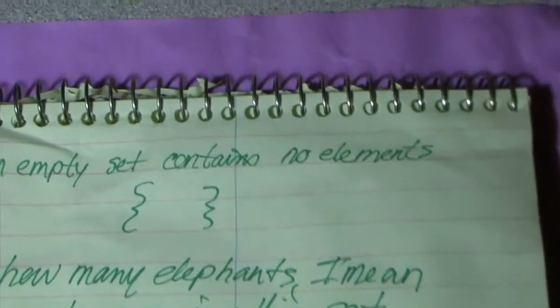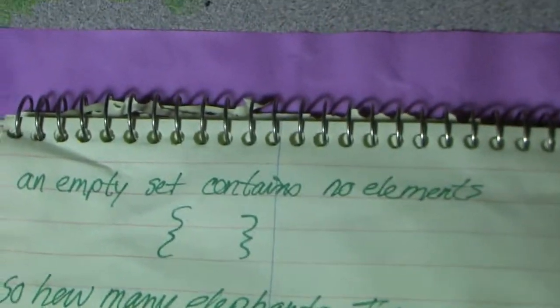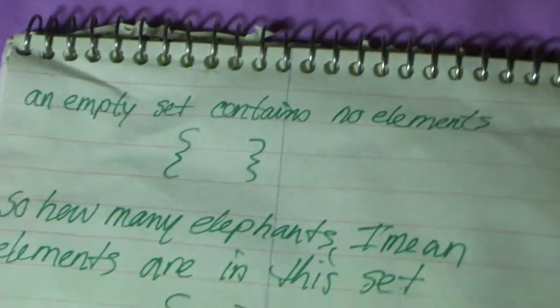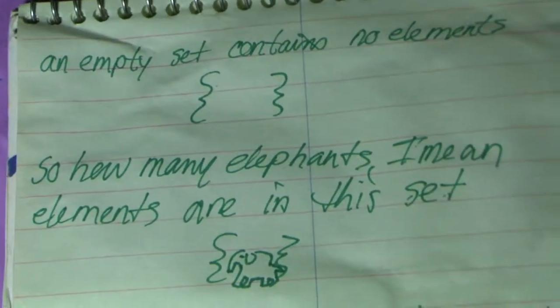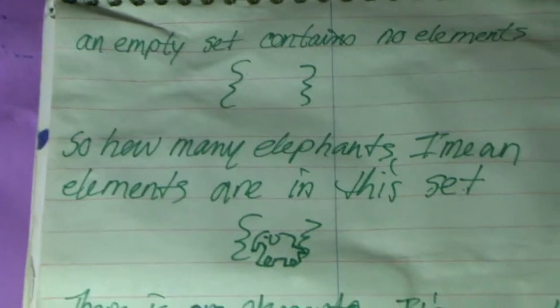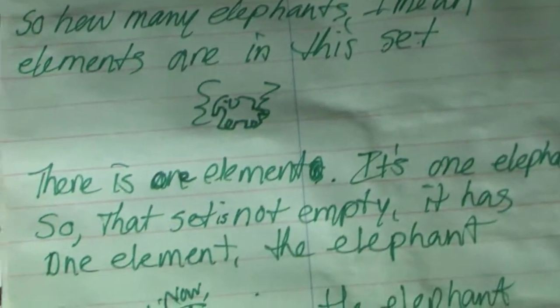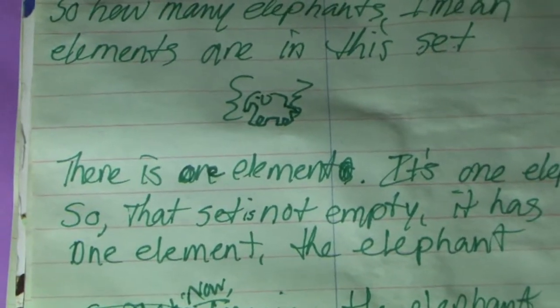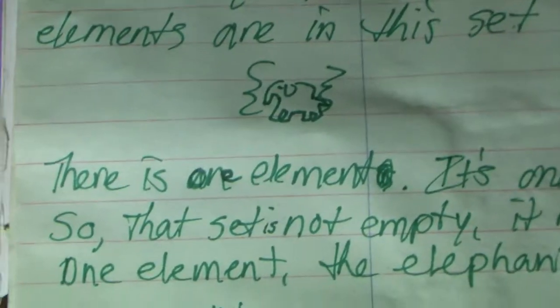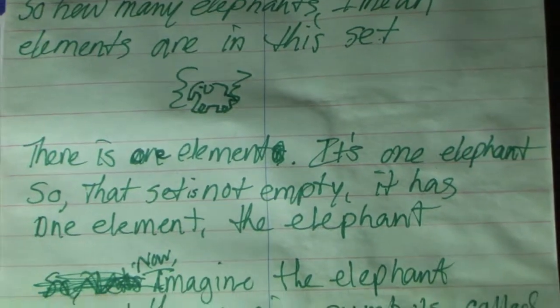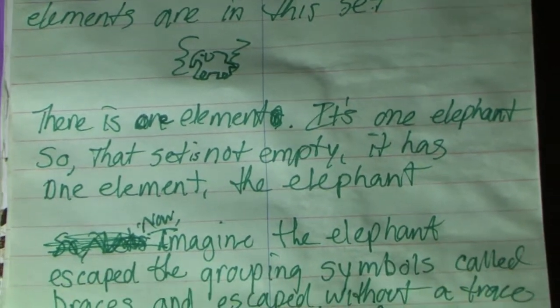An empty set contains no elements. So how many elephants — I mean elements — are in this set? One. Well, there is one element. It's one elephant. So the set is not empty. It has one element — the elephant.